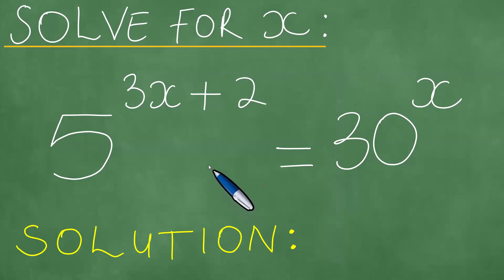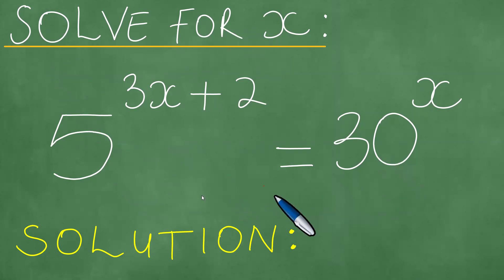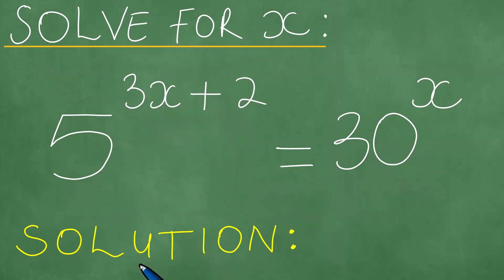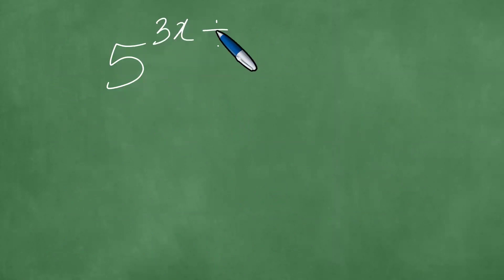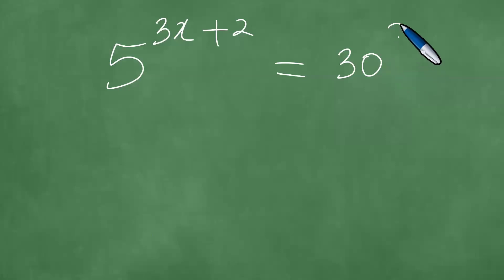We need to solve for x given this exponential equation: 5 to the power of 3x plus 2 is equal to 30 to the power of x. We will present a solution to this problem in a step-by-step fashion.